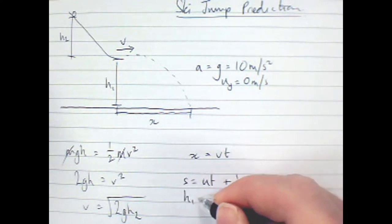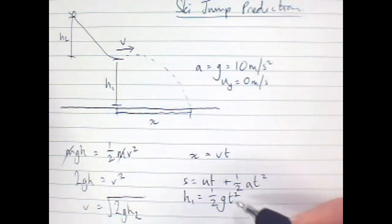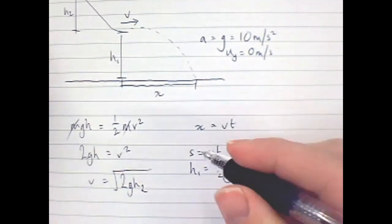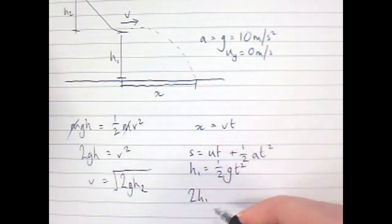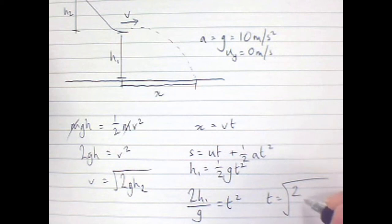So let's just make those changes. And this is G. So rearrange that for time. So 2H1 divided by G is T squared. So T is the root of 2H over G.